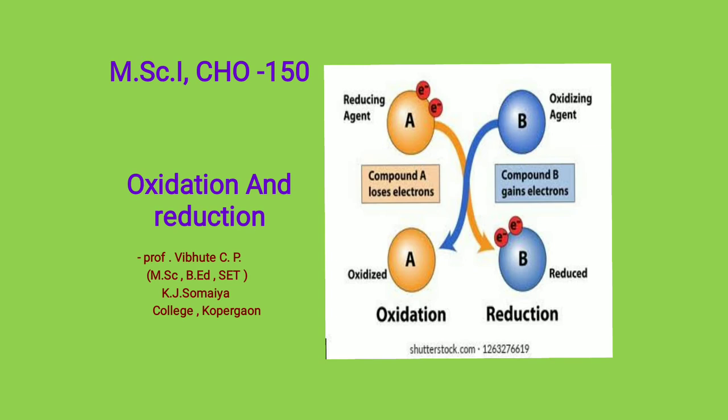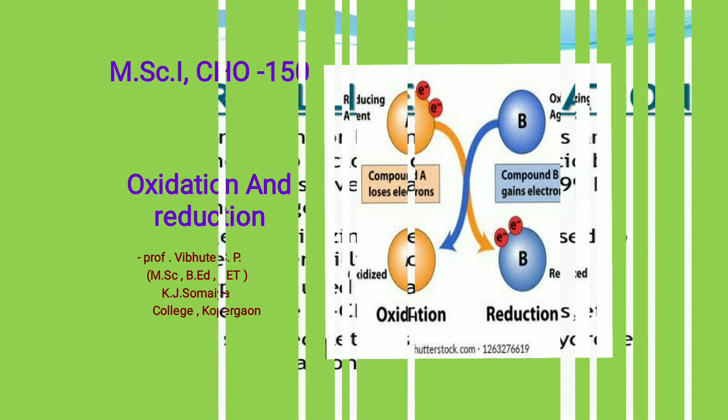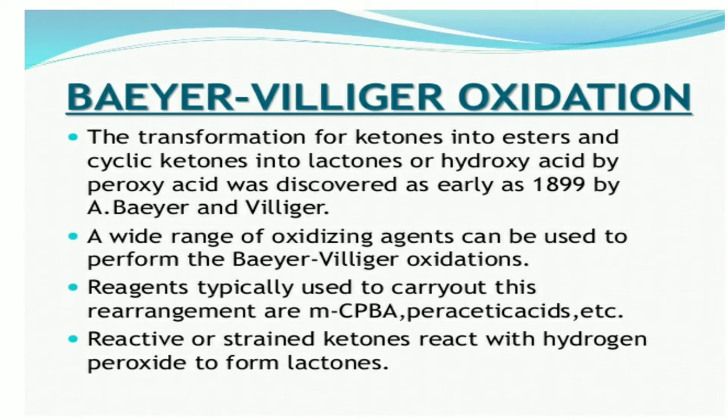Today we are going to learn the next oxidation reaction, called the Baeyer-Villiger oxidation — the transformation of a ketone into an ester, and a cyclic ketone into a lactone or hydroxy acid by a peroxy acid. This was discovered as early as 1899 by scientists Baeyer and Villiger. A wide range of oxidizing agents can be used; the reagents typically used are MCPBA and peracetic acid.